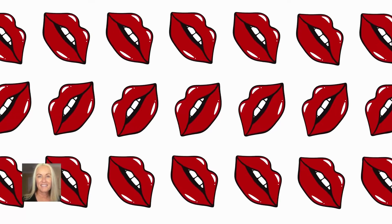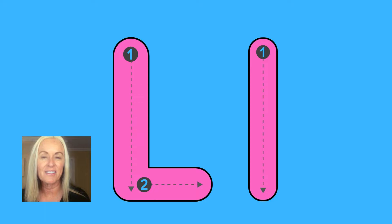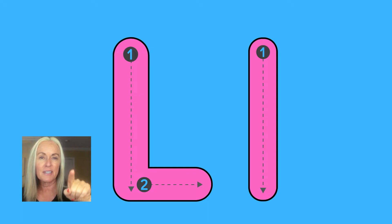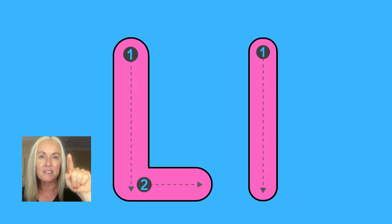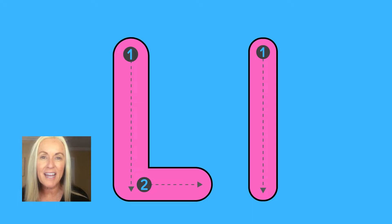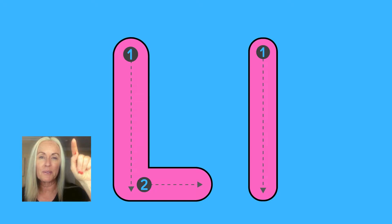Now let's practice writing the uppercase and lowercase letter L. Letter L starts at the top — pull down and slide. Let's do that two more times while we say the sound for letter L: L. Start at the top, pull down and slide. One more time. And the lowercase L — it kind of looks like the number one, but it is an L and it says L. Let's do that three times: start at the top, pull down. L.